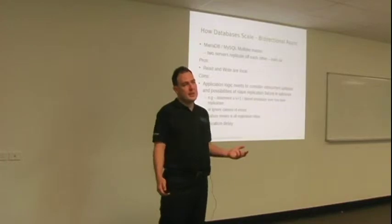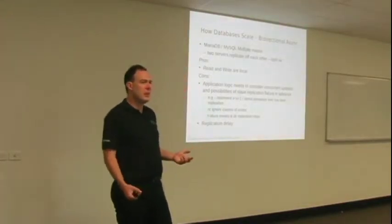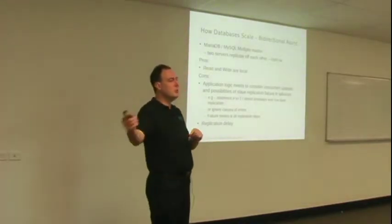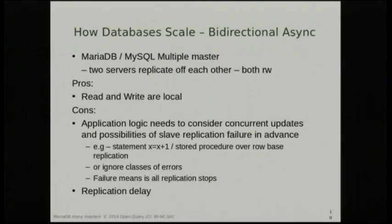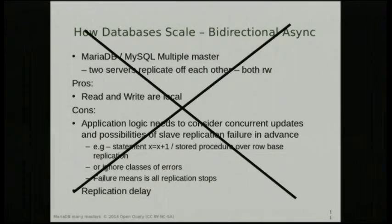Another way that I've seen people try to do it is: you can do an asynchronous that way, you can async back the other way — that means you can write to both. Well, you sort of can, but what you end up with is a major problem if you try to update the same information in an incompatible way. Your slave replication breaks and bad things happen, so don't do that. There are better ways.